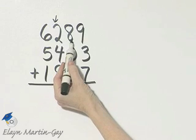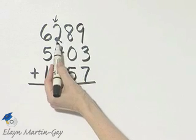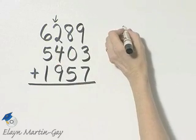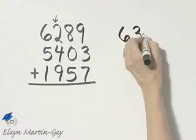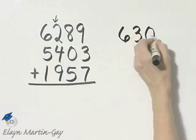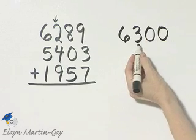This is eight. Since it's five or greater, I will add one to this digit and that would be six, three, and then two zeros as placeholders. To the nearest hundred, this is 6,300.